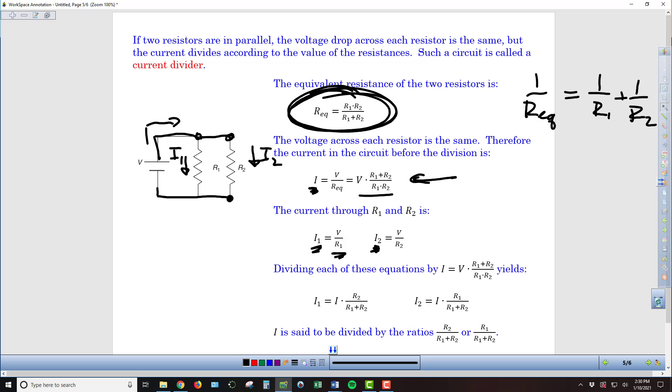And so if we take each of these equations and divide them by this I equals V times R1 plus R2 over R1 times R2, we can end up with I1 equals the original current times R2 over R1 plus R2, and then I2 is equal to the original current times R1 over R1 plus R2. Or in other words, we say that the current is divided by these ratios that we see here.